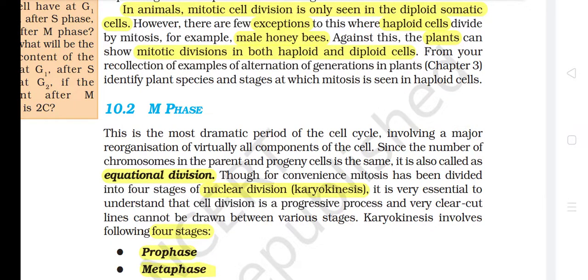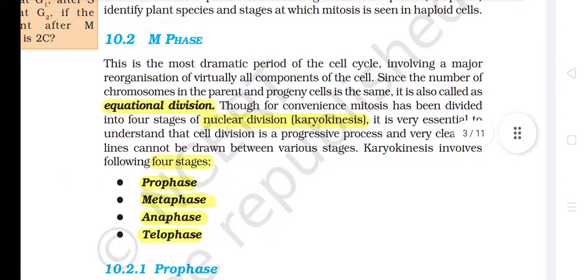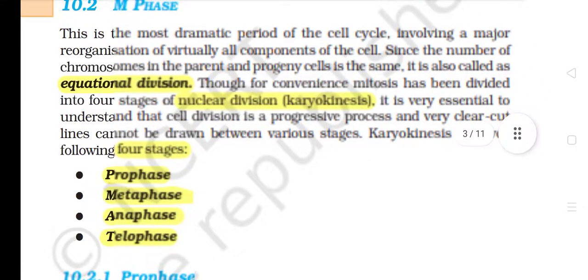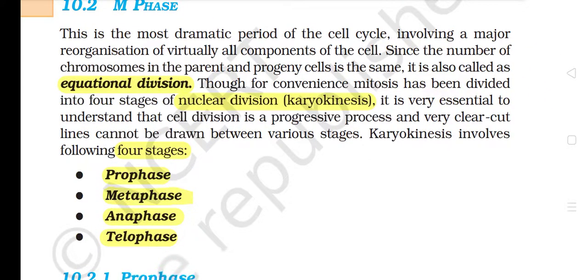10.2 M Phase. This is the most dramatic period of the cell cycle, involving a major reorganization of virtually all components of the cell. Since the number of chromosomes in the parent and progeny cells is the same, it is also called equational division. Though for convenience mitosis has been divided into four stages of nuclear division — karyokinesis — it is very essential to understand that cell division is a progressive process and very clear-cut lines cannot be drawn between various stages.